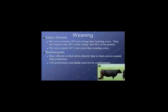Specifically, how does that happen? When we wean those calves, it reduces the demand on the land and on the cows. Dry cows consume 30% less forage than lactating cows. They also require only 60% of the energy and 50% of the protein. Dry cows require 60% less water than lactating cows. On the calf side, it's obviously more efficient to feed calves directly than to feed cows to feed the calves. Calf performance and health need not be compromised — we'll talk about that more later.